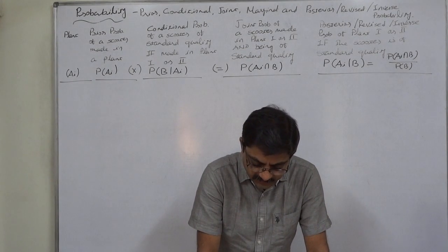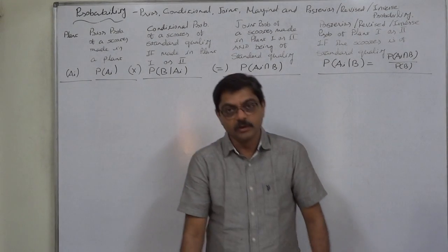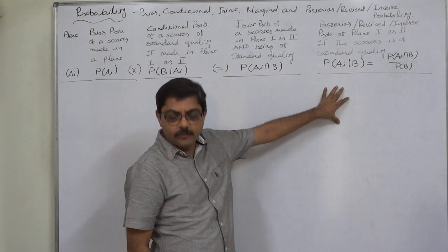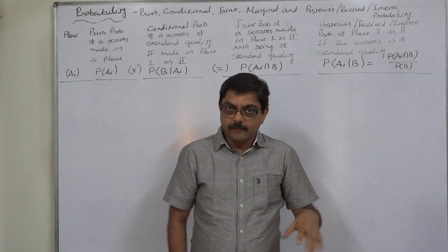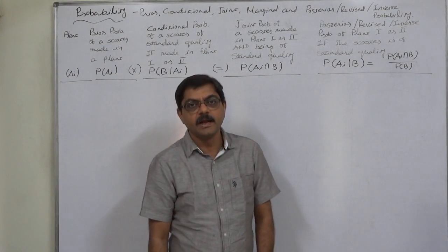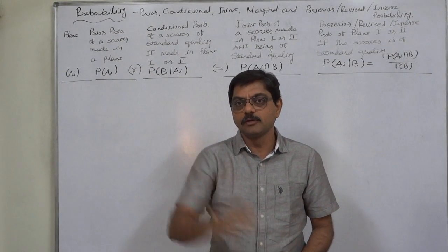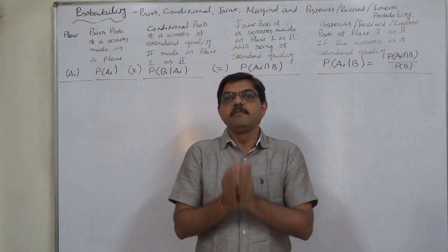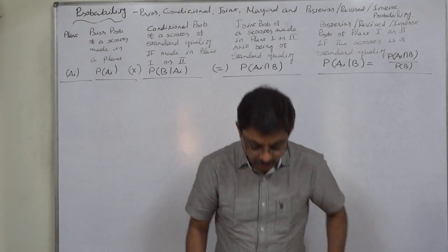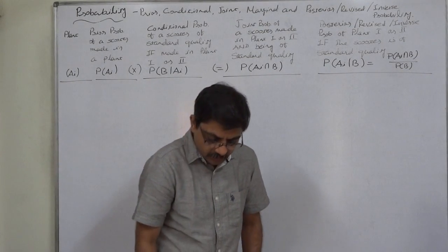Question one: what is the probability that a scooter selected at random came from plant one, if it is known that the scooter is of standard quality? We need to calculate the posterior probability of plant one. The prior probability of plant one is 80%, but given we know the scooter is of standard quality, this becomes a case of posterior or revised or inverse probability. Question two: what is the probability the scooter comes from plant two if it is of standard quality?